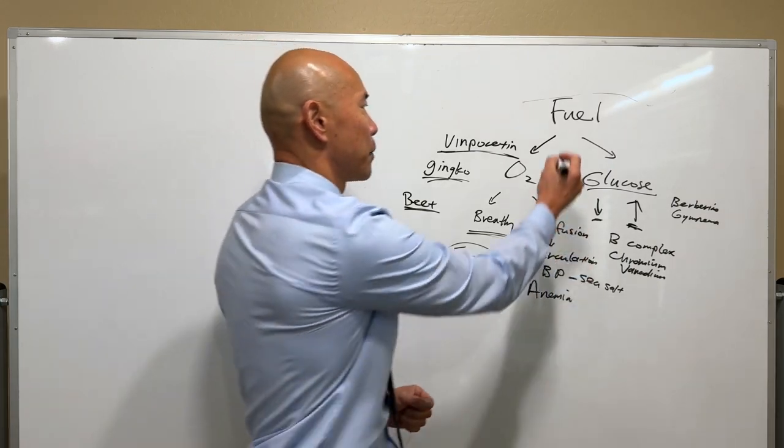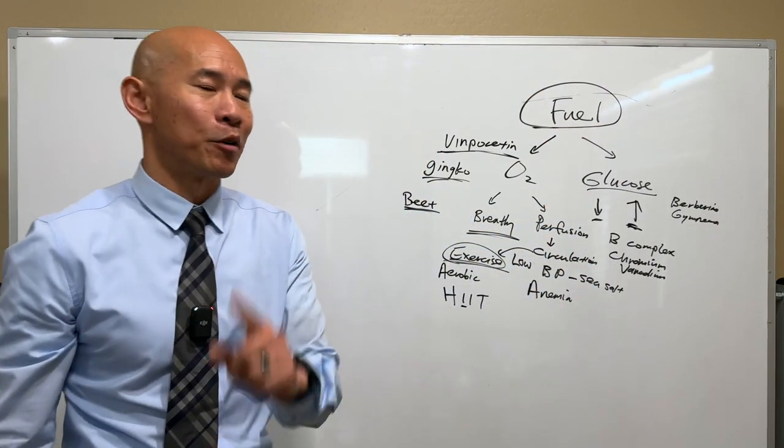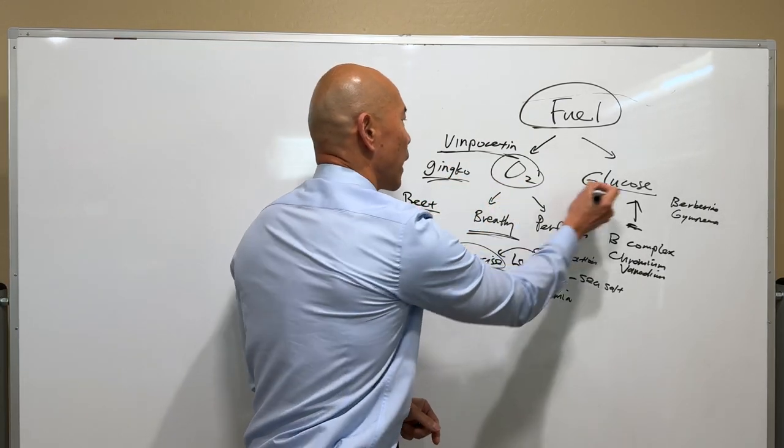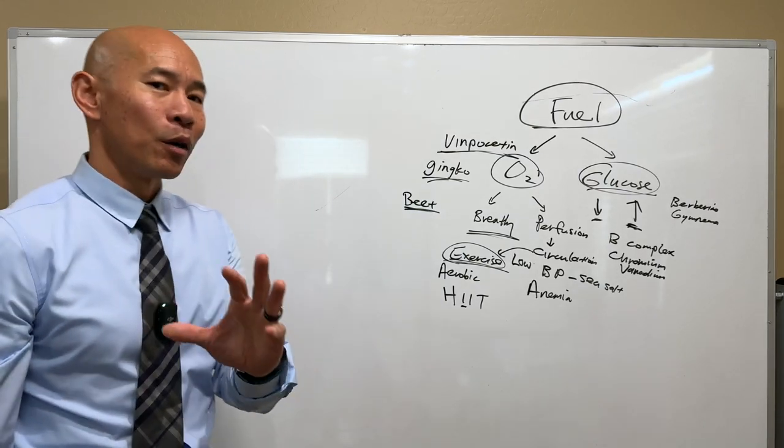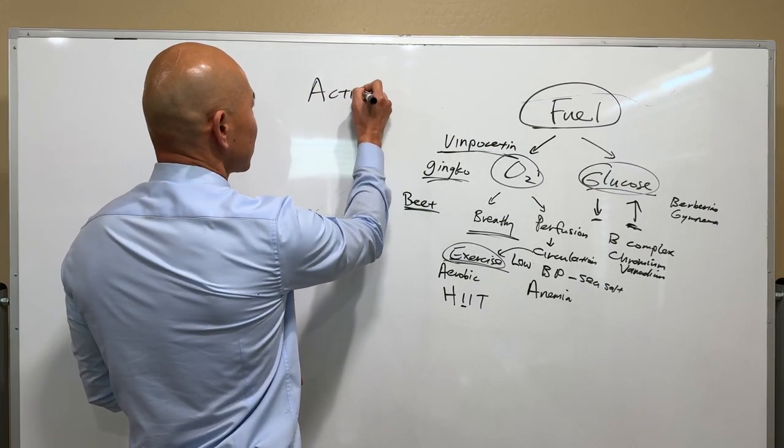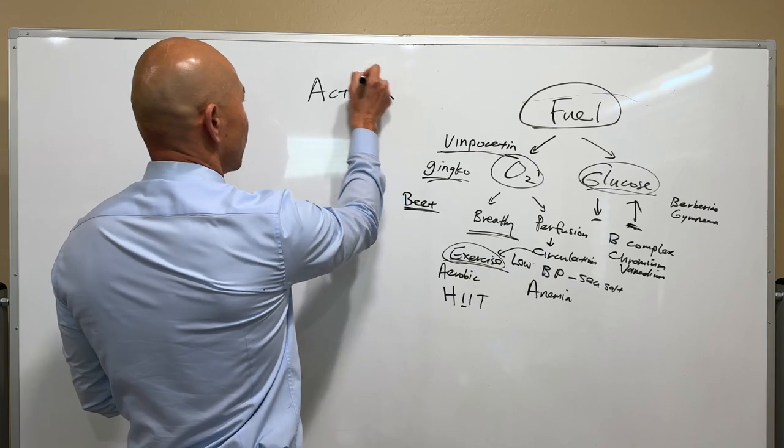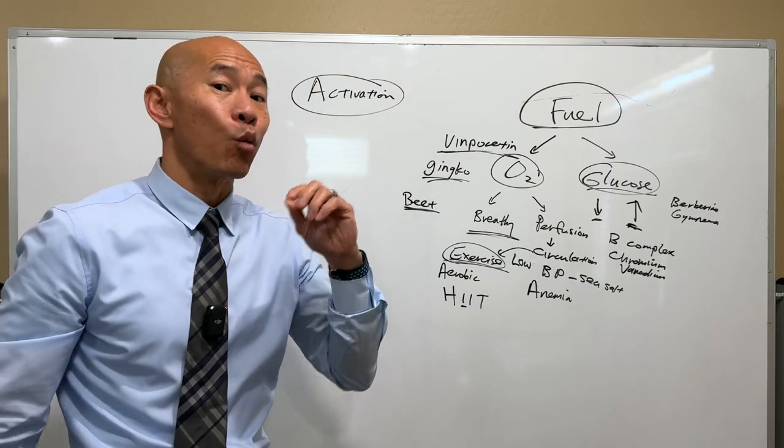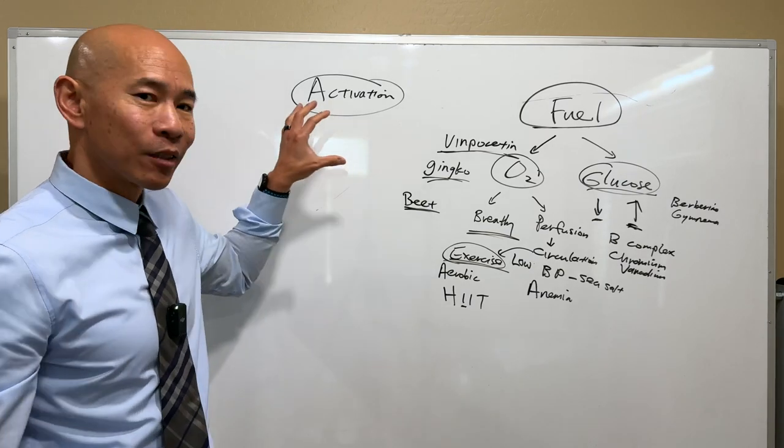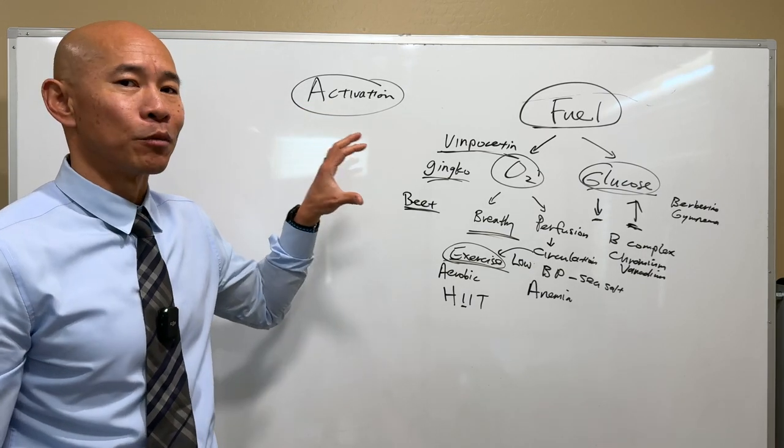So we talked about fuel as one of the primary requirements and that fuel comes in the form of oxygen and glucose. Another requirement for neuron is activation. So activation means that your brain cells have to be working. You don't use it, you lose it, as the old adage goes. And that's ever more true for neurons, your brain cells.